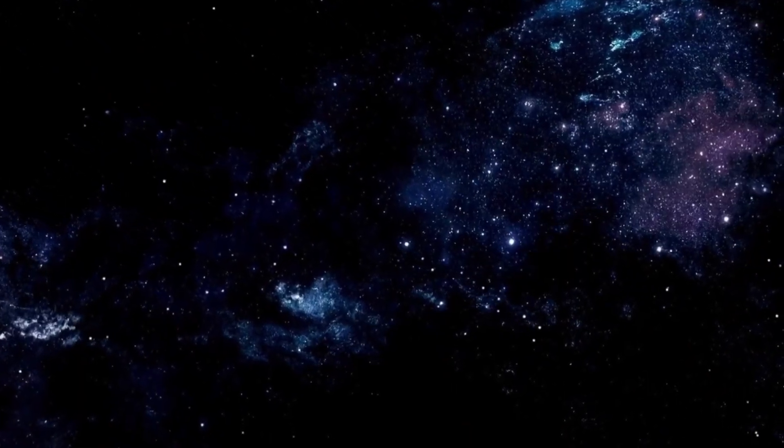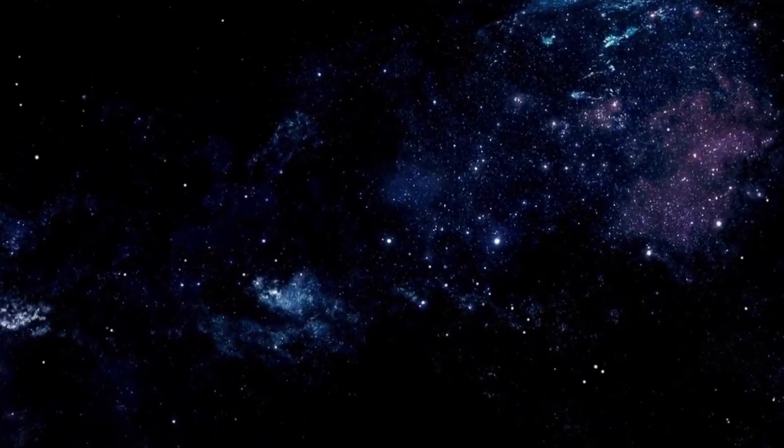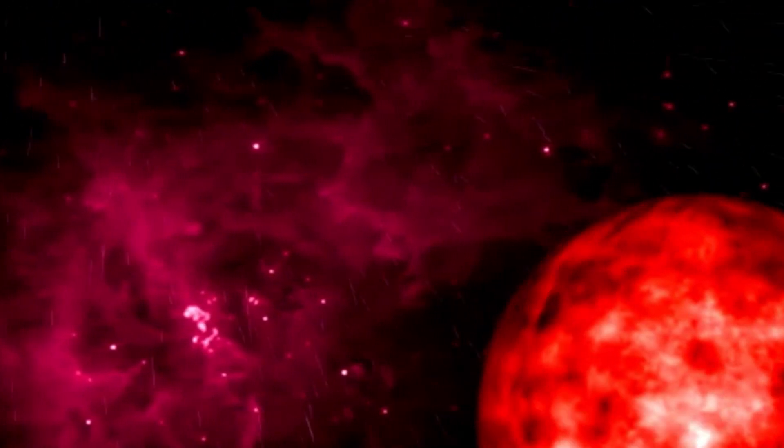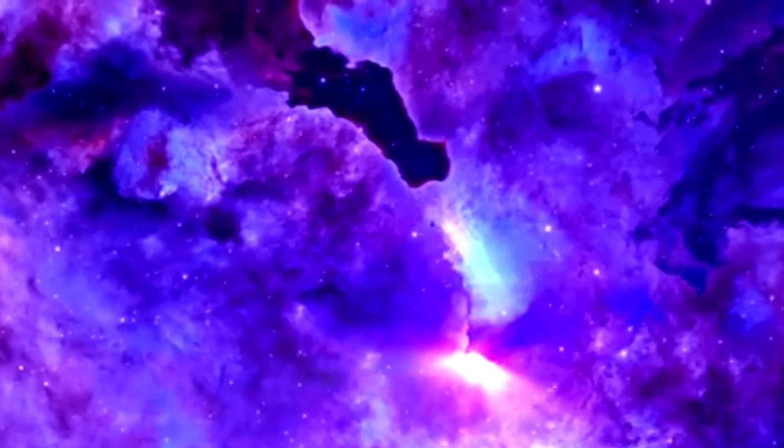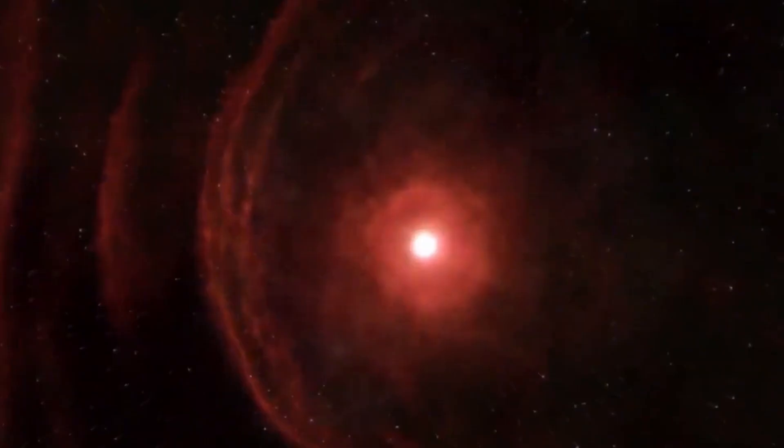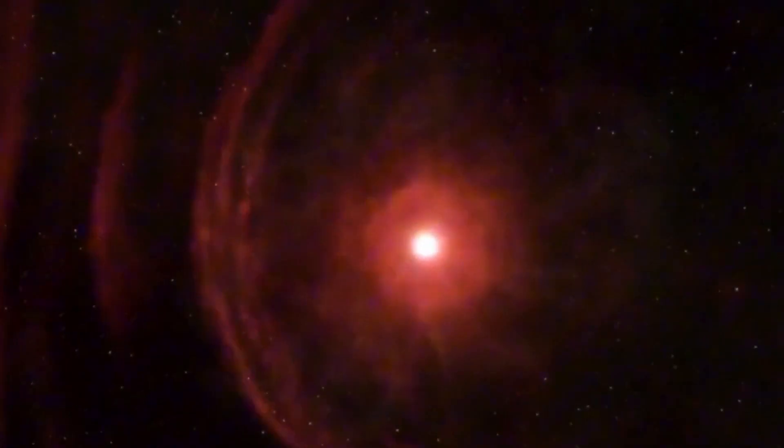Betelgeuse is currently undergoing fusion processes, gradually progressing through various elements like helium, carbon, oxygen, silicon, and iron. As a red giant star, it fuses helium into carbon in its core, a process that takes thousands of years. Eventually, it will progress to fuse heavier elements until it can no longer sustain fusion reactions, leading to gravitational collapse and potentially forming a black hole or a neutron star.